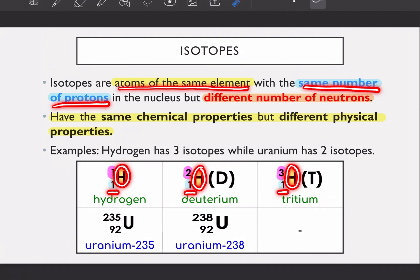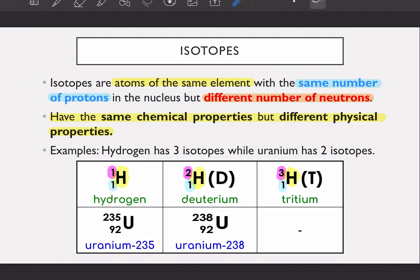In the nucleus but different number of neutrons. Kalau awak tengok atas ni, dia punya nucleon number is one, two and three. So that means that kalau awak punya number of proton is the same, that means number of neutron is different.